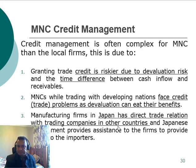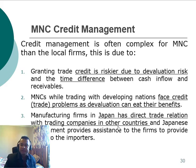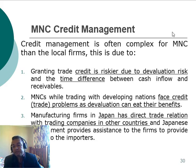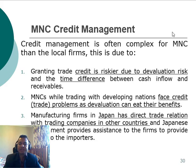Credit management is often more complex for multinational corporations than for local firms, because granting trade credit is riskier due to currency devaluation risk and the time difference between cash inflow and receivables. MNCs may face problems in developing nations where currency devaluation eats into some benefits. Interestingly, some firms in Japan have direct trade relationships with companies in other countries, and the Japanese government provides assistance to firms in offering credit to importers.